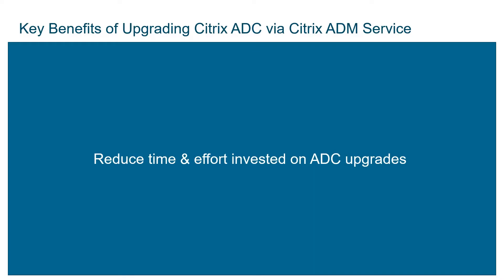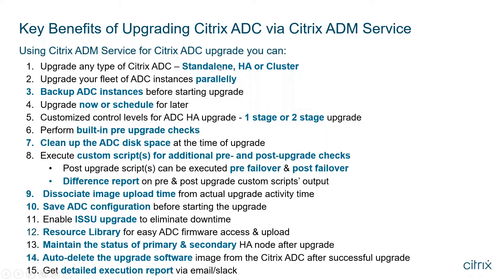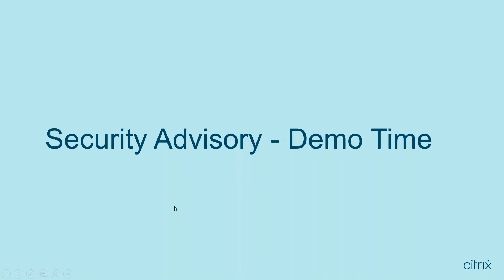Before the demo, a quick recap of the benefits of upgrading ADC via ADM Service: you can upgrade any type of ADC, upgrade them in parallel, take a backup of the config before upgrading, schedule the upgrade, and do two-stage upgrades — upgrade one node in an HA pair, pause, do checks, then upgrade the second. ADM also performs pre-upgrade checks to highlight issues that would lead to upgrade failure. You can find more details in our documentation and a YouTube video as well.